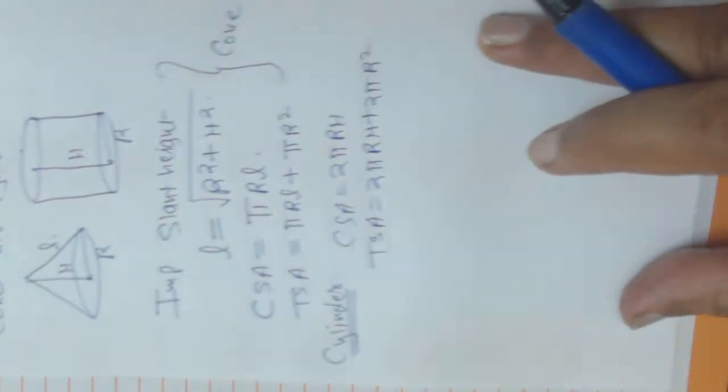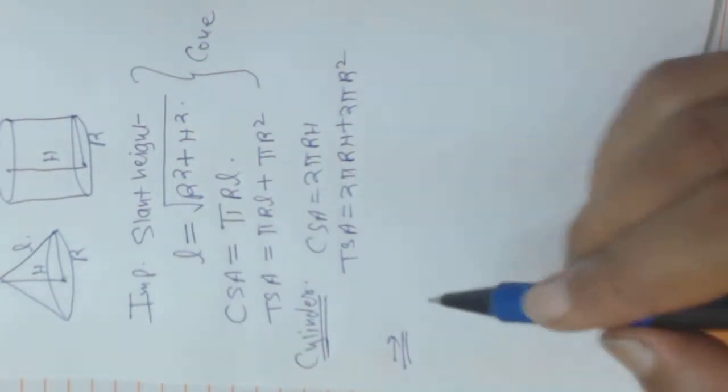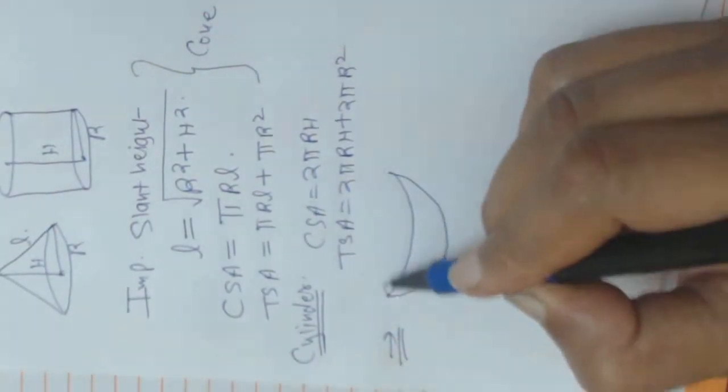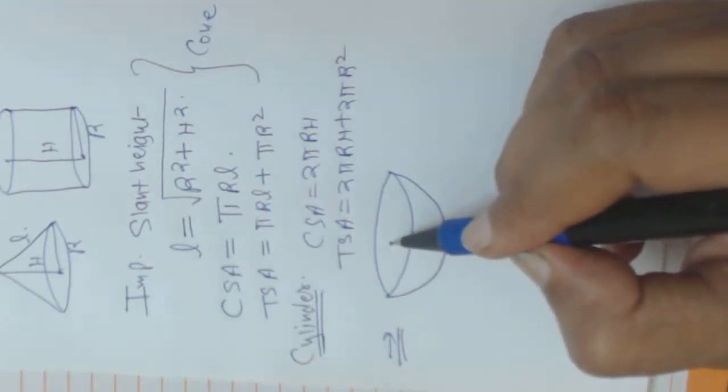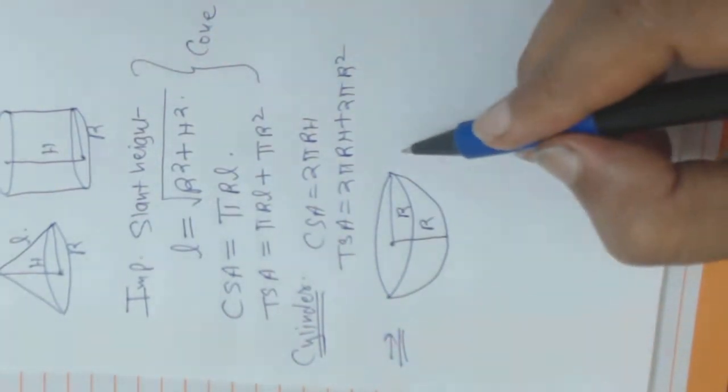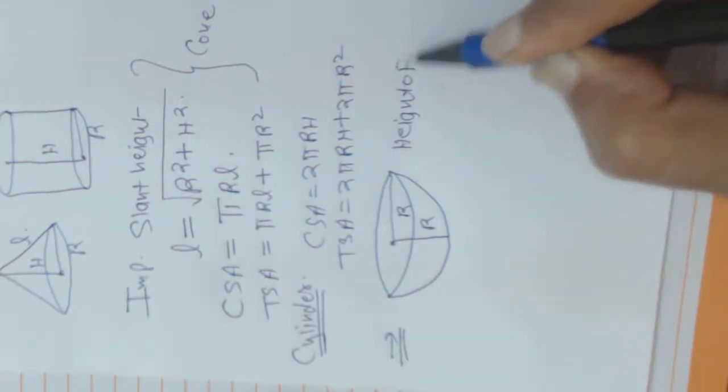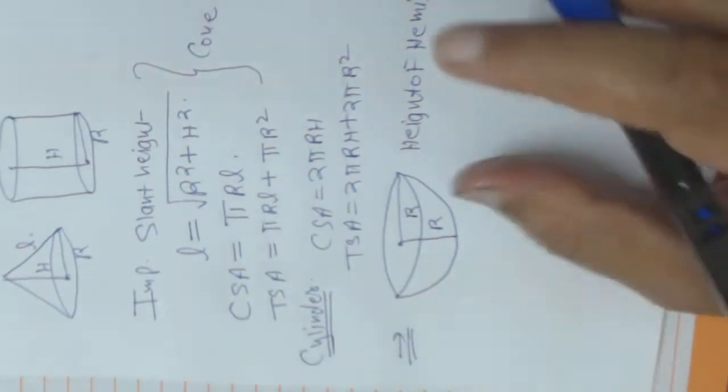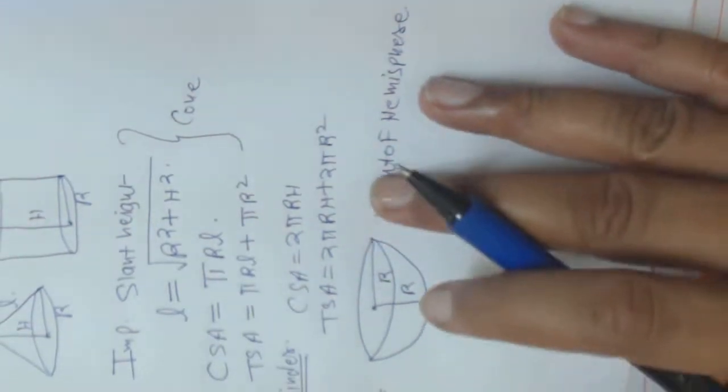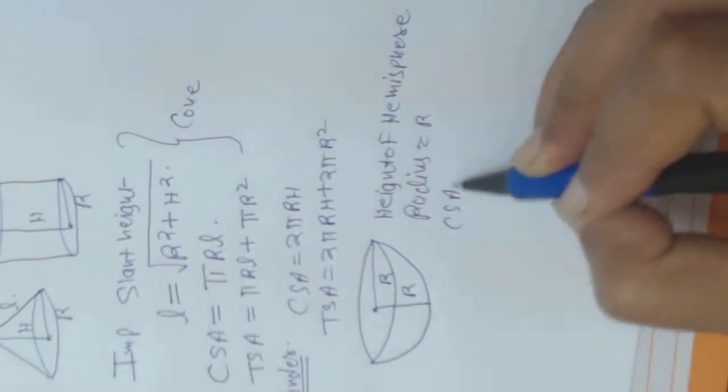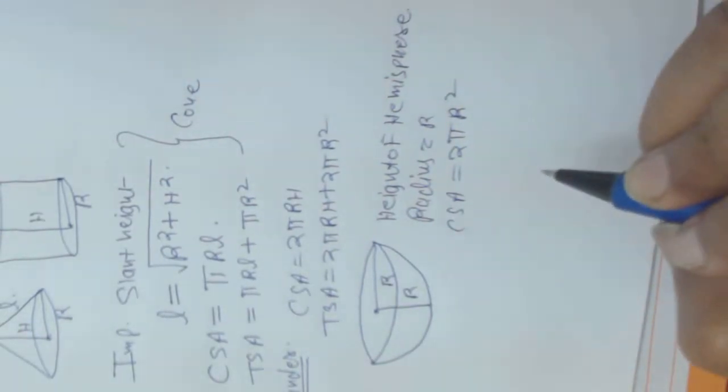So how we get the combination of these two. One more thing I want to tell you, this is hemisphere. This is the radius. So height of the hemisphere is R, and radius is also R. Its CSA is 2 pi R square.